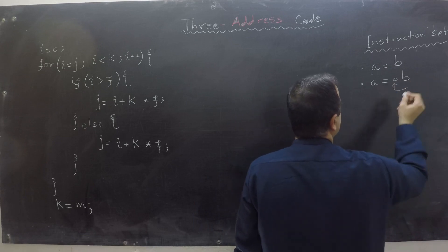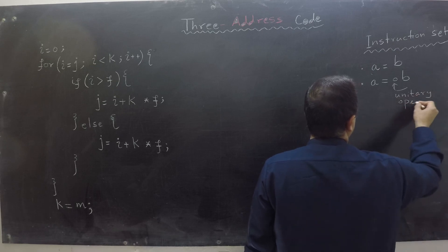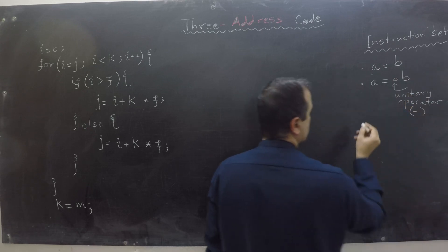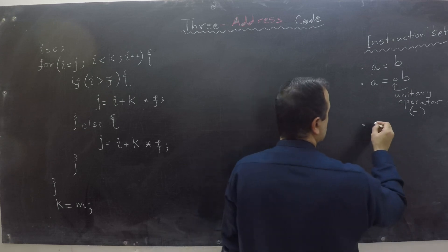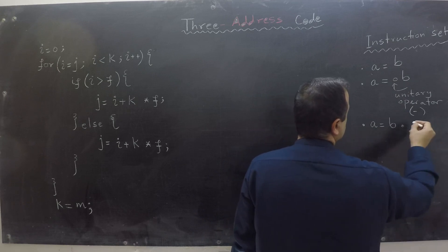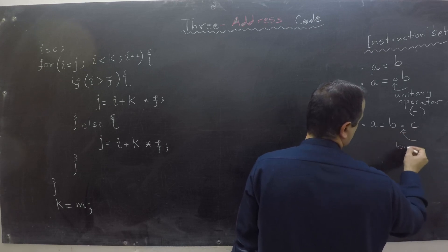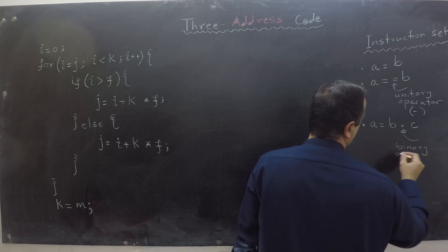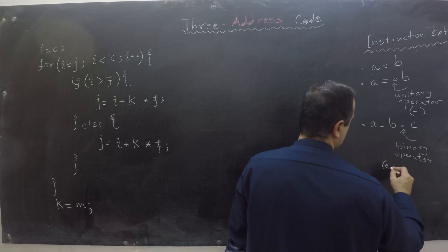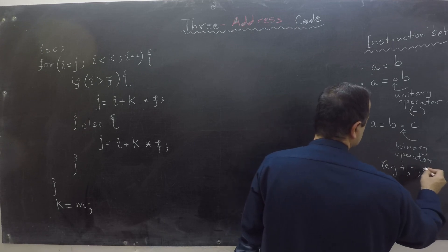This is a unitary operator — for example, minus. The next instruction is A equals B with some binary operator C. This binary operator could be plus, minus, times, and so on.